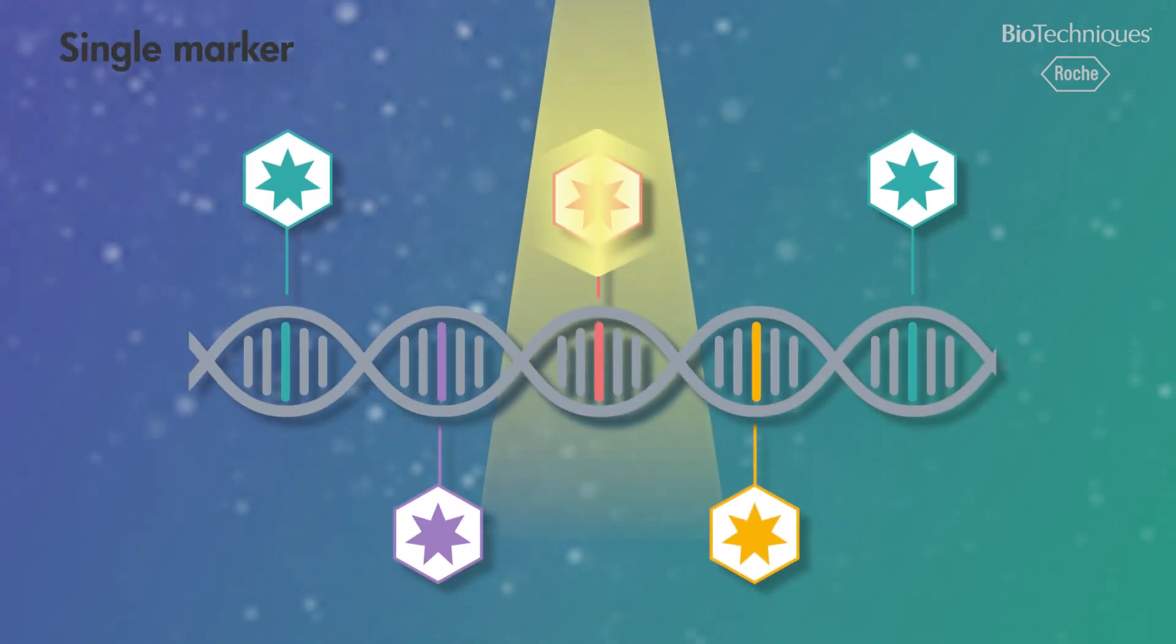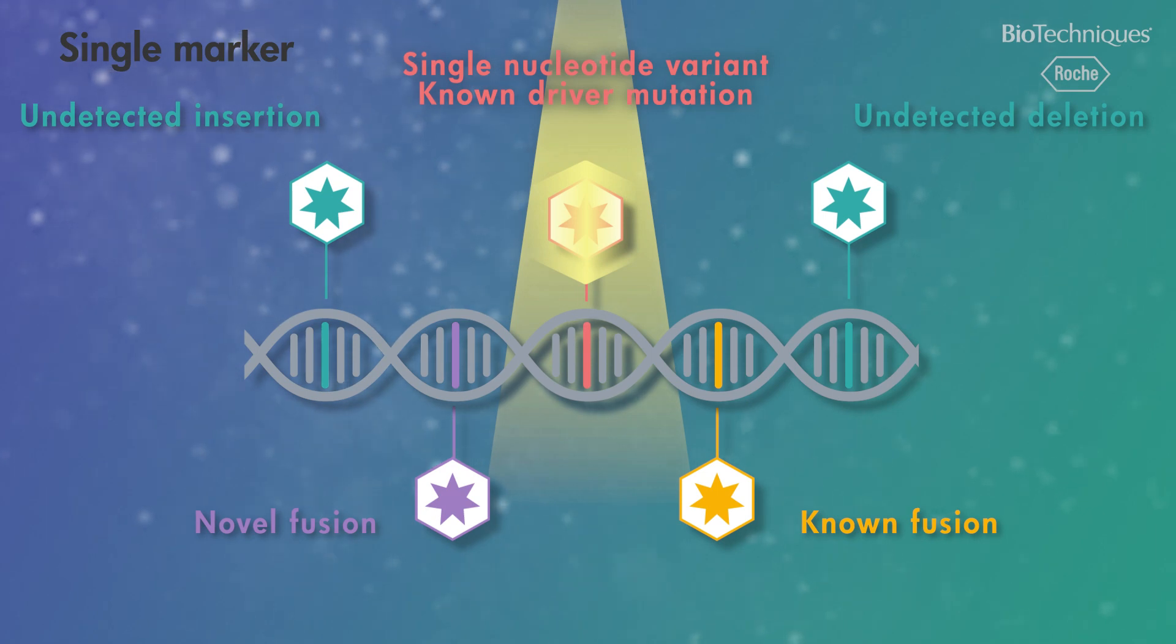Commonly used single marker tests, such as PCR and FISH, interrogate small specific regions of DNA for pre-specified alterations known to cause cancer, revealing only one or two categories of genomic alteration.